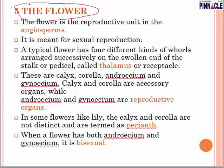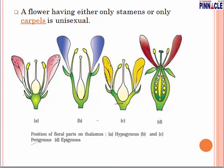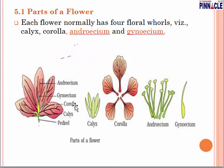Let us see the diagram of the flower to understand all these terminologies better. This is the thalamus. The male part is the androecium. This is the peduncle — the stalk-like structure — and this is the calyx, the green part at the bottom of the flower.